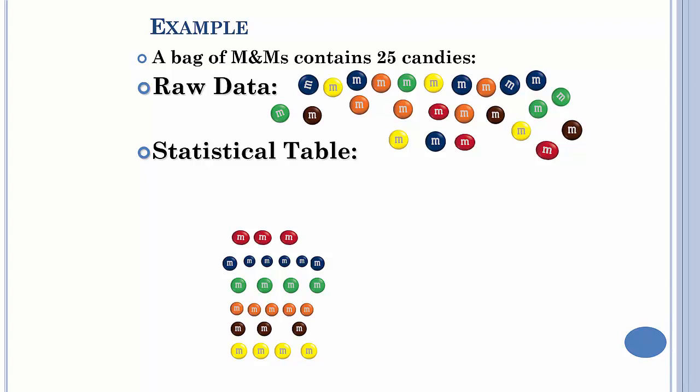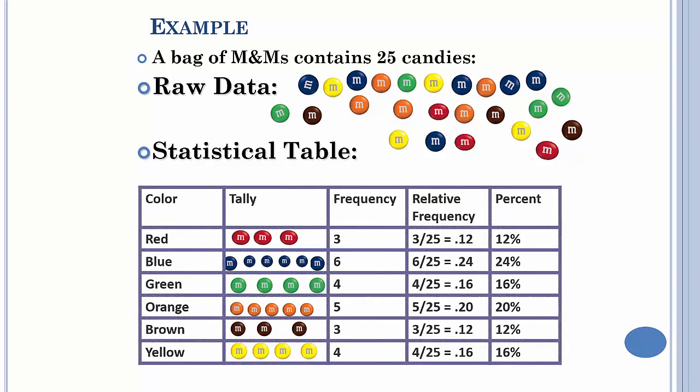Here's your raw data, then you kind of shuffle things up so you can count them properly. Then you can put them in a table. The tally just means you're doing tick marks to figure out how many you have. Then you write those as frequencies as actual numbers, then if you take those numbers and divide by the total, we had 25 total candies.